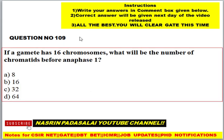Question number 109: A gamete has 16 chromosomes. What will be the number of chromatids before anaphase 1? Options: A) 8, B) 16, C) 32, D) 64.